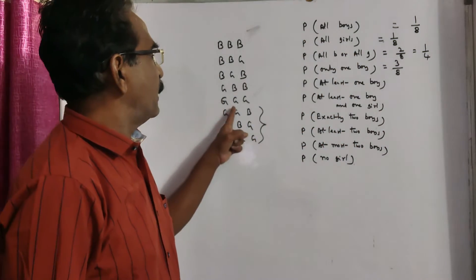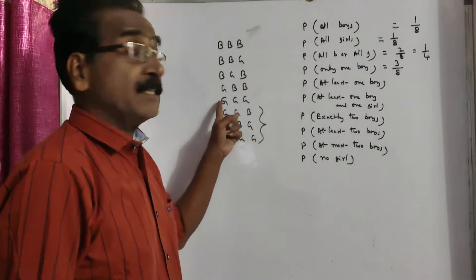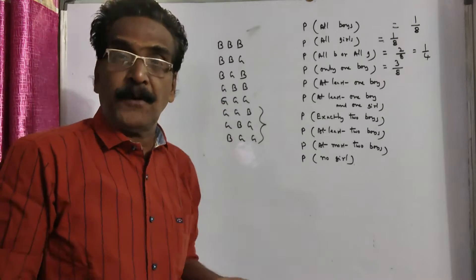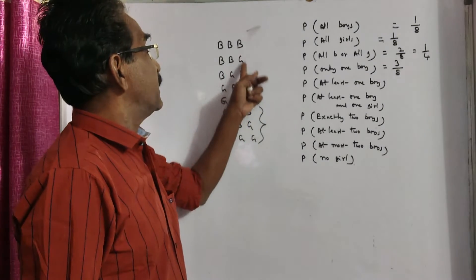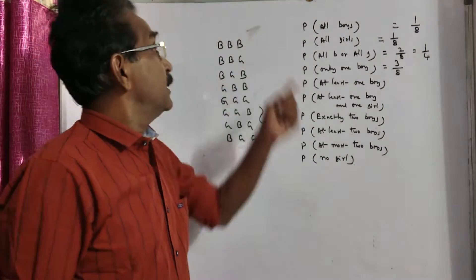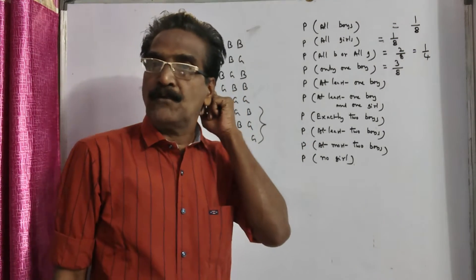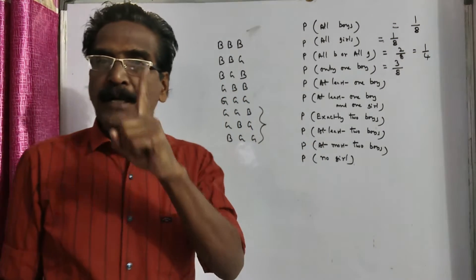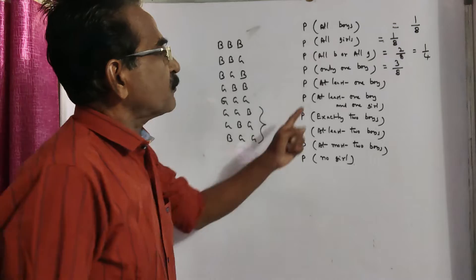In one case there is no boy; in three cases there are two boys; in one case there are three boys. But we want only one boy, so favorable outcomes are three out of eight.